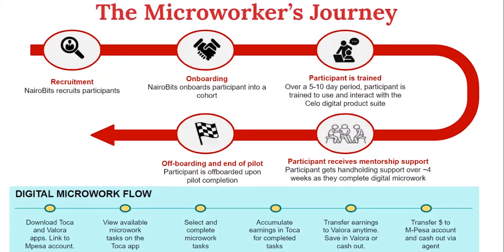The last section covers the journey that you will go through. There are four weeks of hand-holding and a short period of training of about five to ten days — roughly a week. The first step is recruitment, which was done by Narrowbits in January and the last quarter of last year. Then you came for screening in early January, and if you were selected, you received an email inviting you for training.